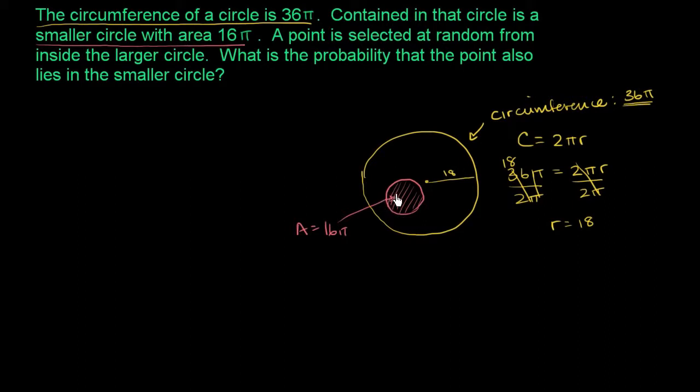So if we want to know its area, its area is going to be pi r squared, which is equal to pi times 18 squared. And let's figure out what 18 squared is. 18 times 18. 8 times 8 is 64. 8 times 1 is 8, plus 6 is 14.